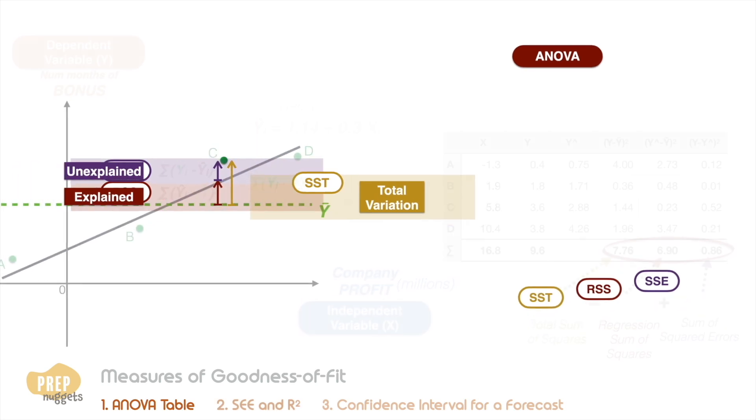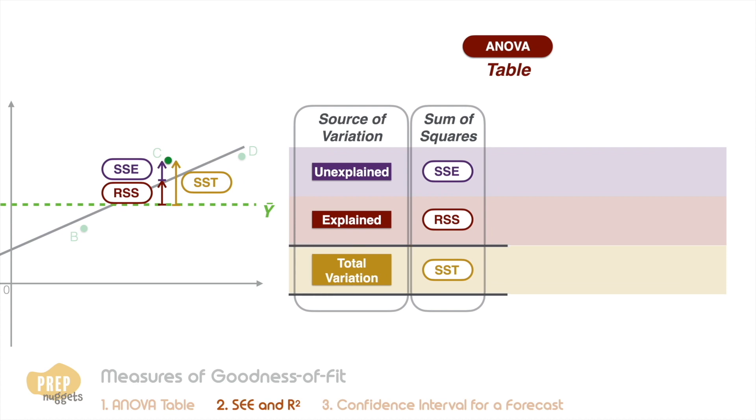With that, let's move on to the ANOVA table. In statistics, there's this concept of degrees of freedom. The total number of degrees of freedom is n minus 1, where n is the number of observations.